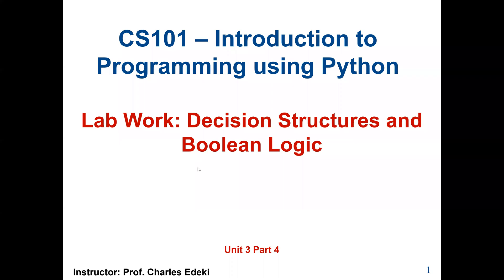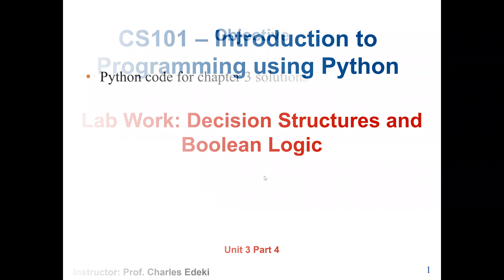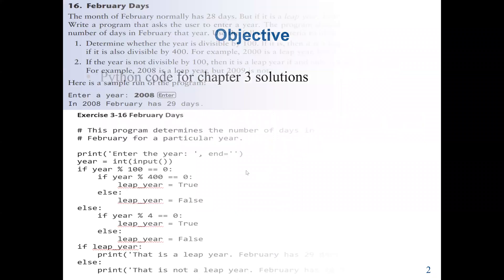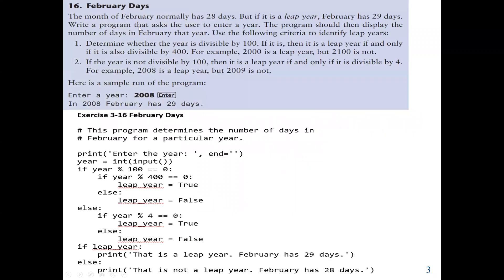Welcome to CS101, Introduction to Programming using Python. This lab will cover Chapter 3 of our course textbook, which is Decision Structures and Boolean Logic. In this lab work, we are going to solve one problem using decision control structures.